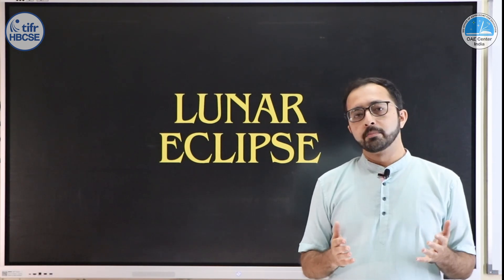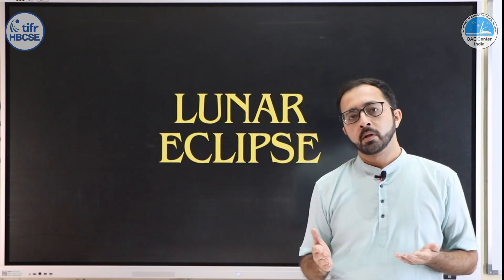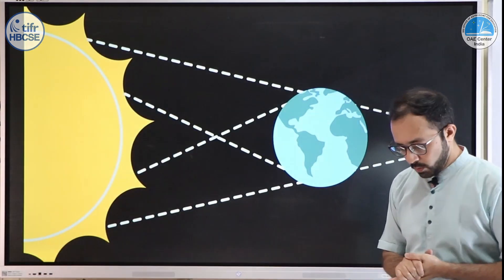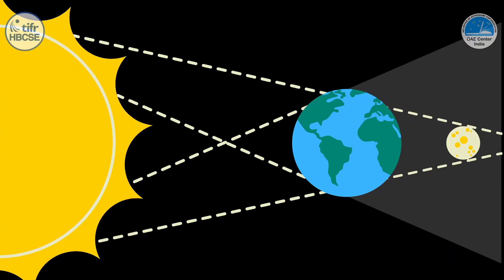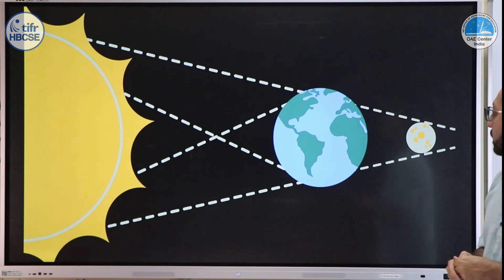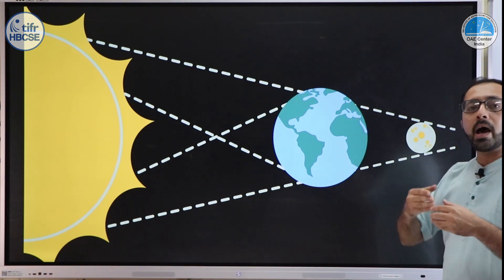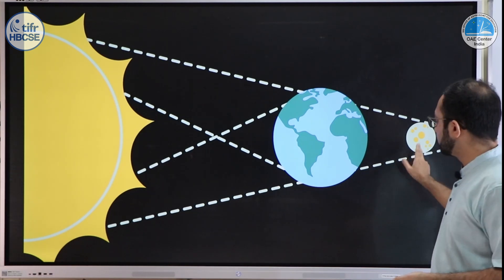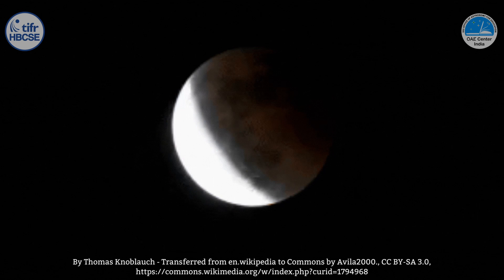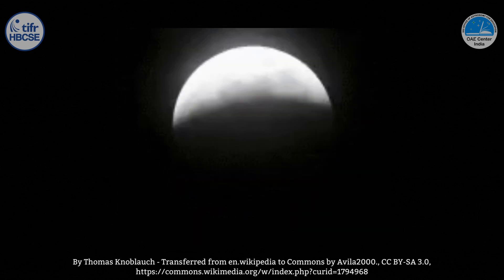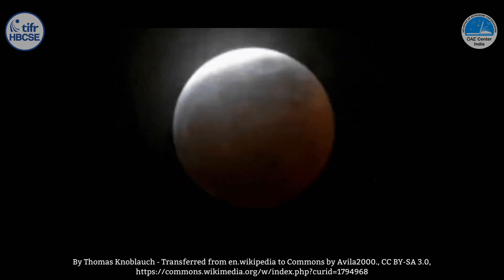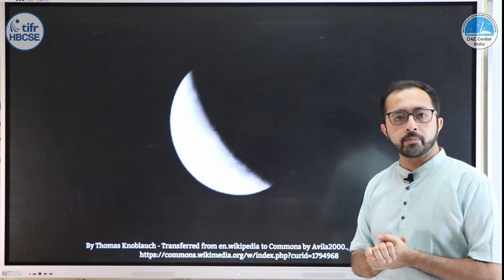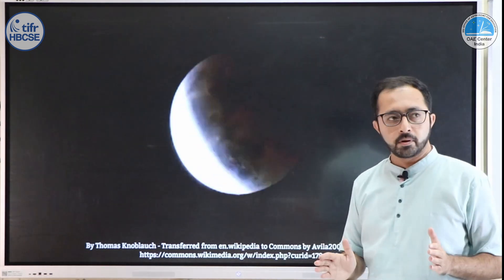Now let us talk about lunar eclipses. Lunar eclipses are basically the eclipse of the moon, and a lunar eclipse occurs on a full moon day. The earth comes in between the sun and the moon, and the shadow of the earth falls in a direction through which the moon happens to pass. Because the moon passes through that shadow, we see a lunar eclipse. You can see in the video how the moon is slowly covered by earth's shadow and suddenly turns red — this is the total lunar eclipse.